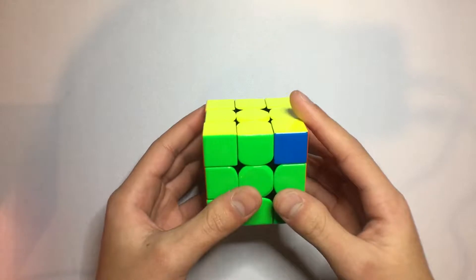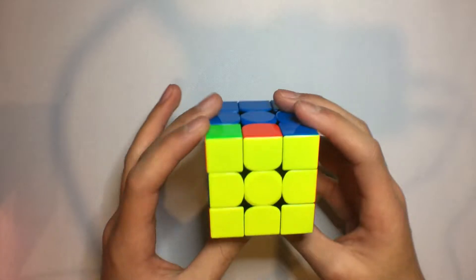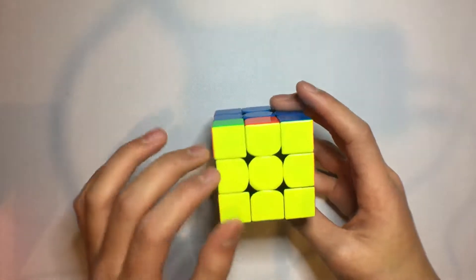Now a little bit faster it looks like this. So what this algorithm does is it switches these two corners on the puzzle as well as these two edges.